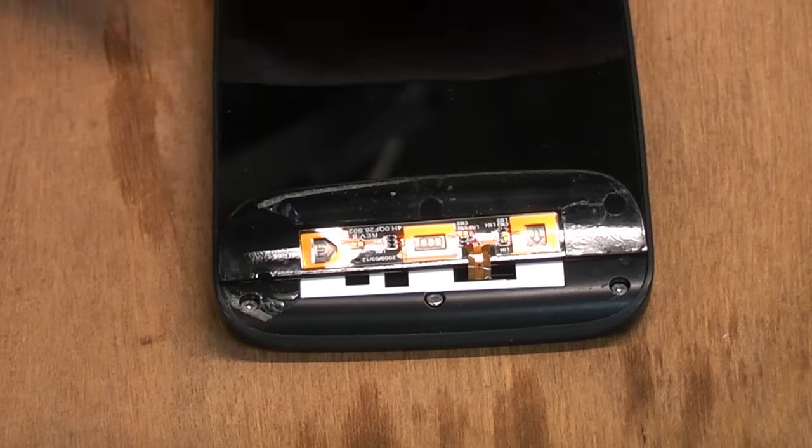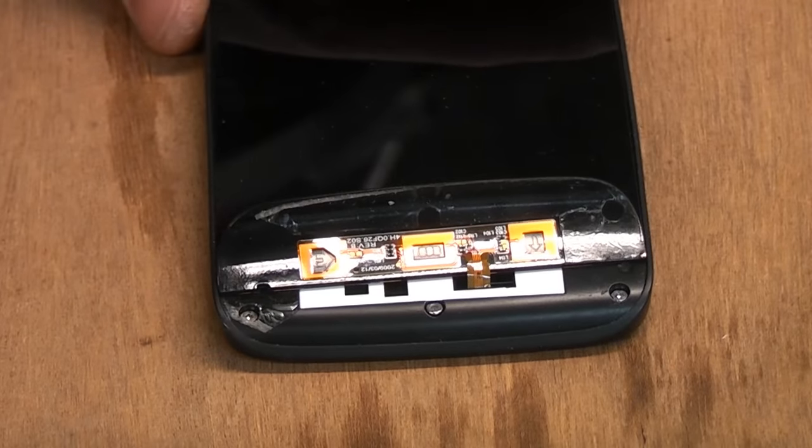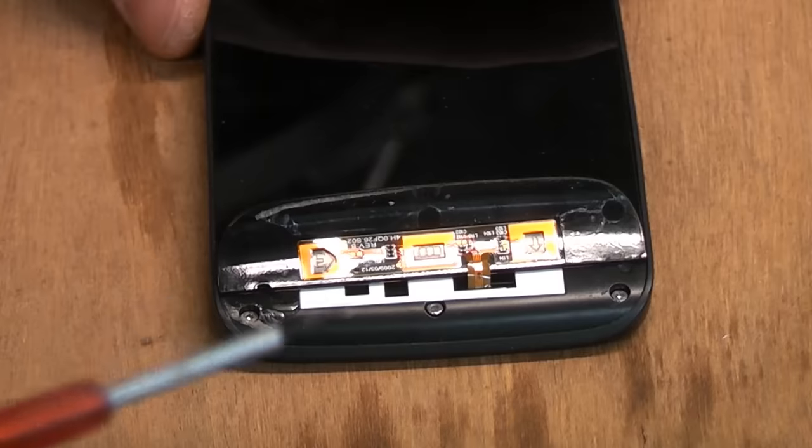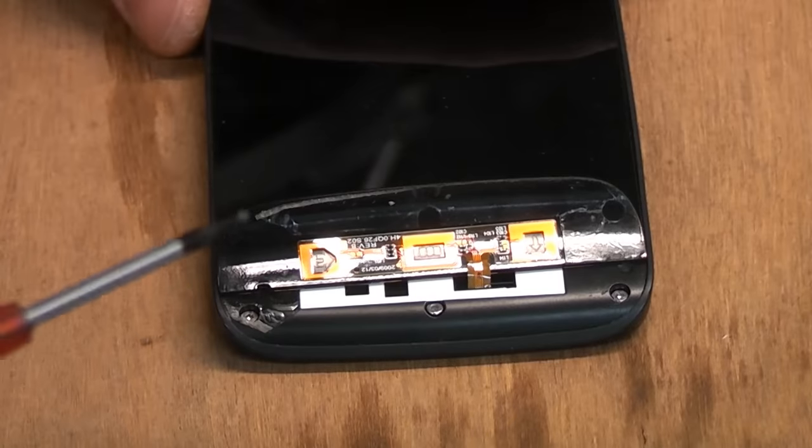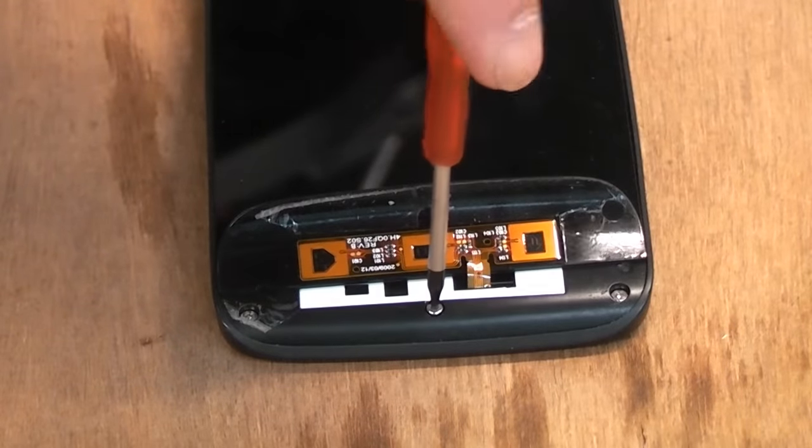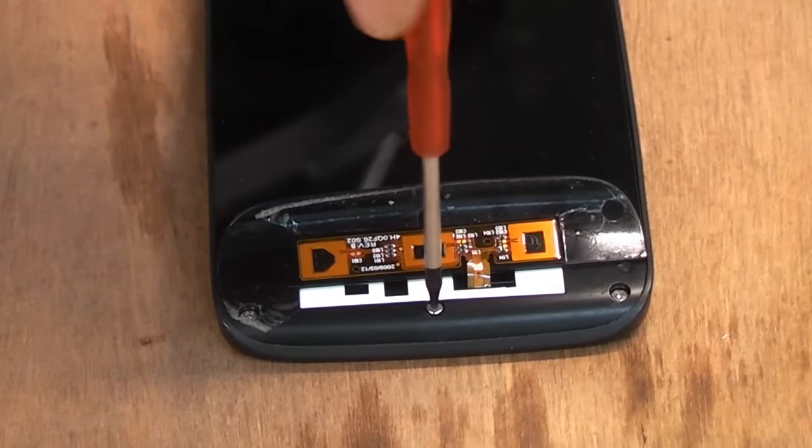In this example, we've got a couple of T5 screws which are rounded off, and that is the actual driver for them. You can see that these are very small indeed, so there's just no chance at all of us undoing them. The driver just spins around completely.